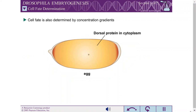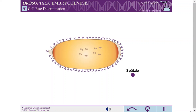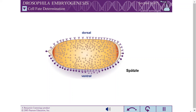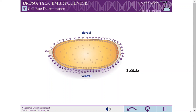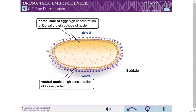Cell fate is also determined by concentration gradients. For example, the Dorsal protein is a regulatory protein initially distributed throughout the cytoplasm of the unfertilized egg cell. However, transport of the Dorsal protein into nuclei is controlled by a cell signaling molecule called Spätzle. Spätzle concentration is highest in the extracellular matrix on the ventral side of the egg cell. This concentration gradient leads to higher concentrations of Dorsal protein in ventral nuclei, with lower levels of Dorsal protein in nuclei located in lateral regions.